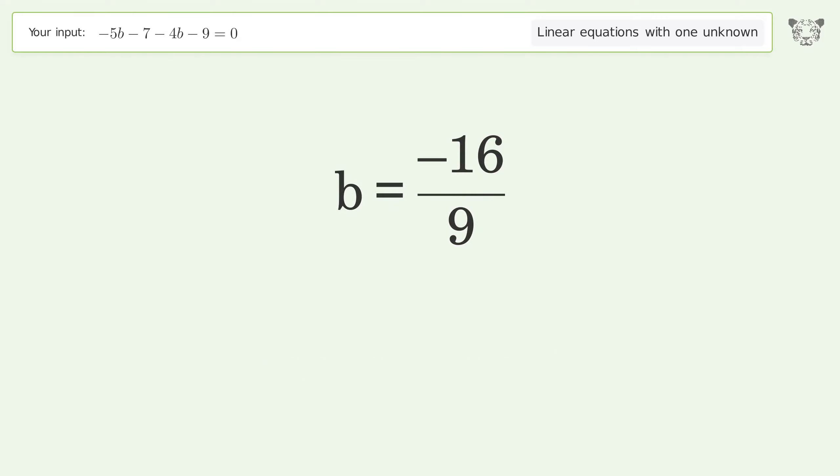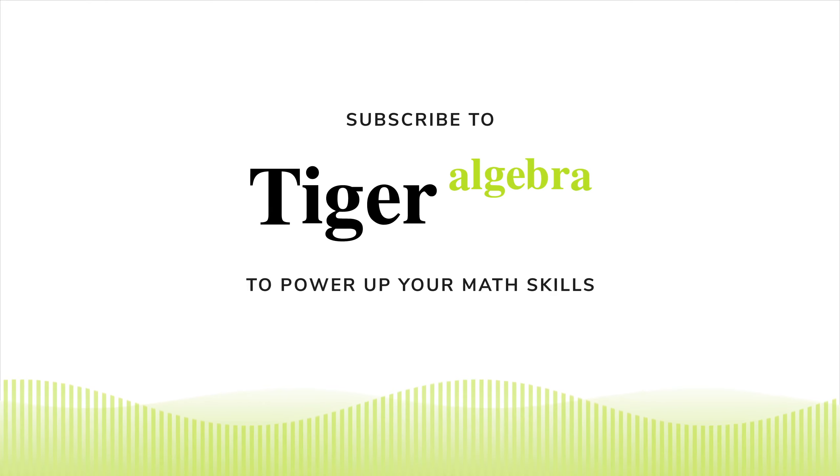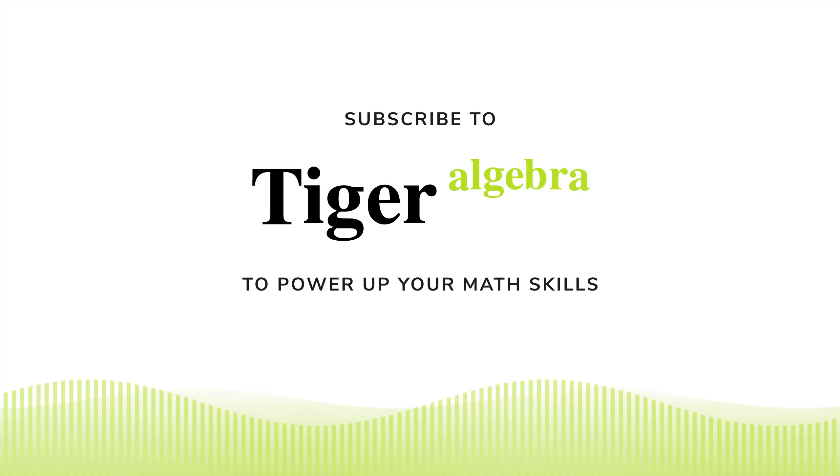Group all constants on the right side of the equation. Add 16 to both sides. Simplify the arithmetic.